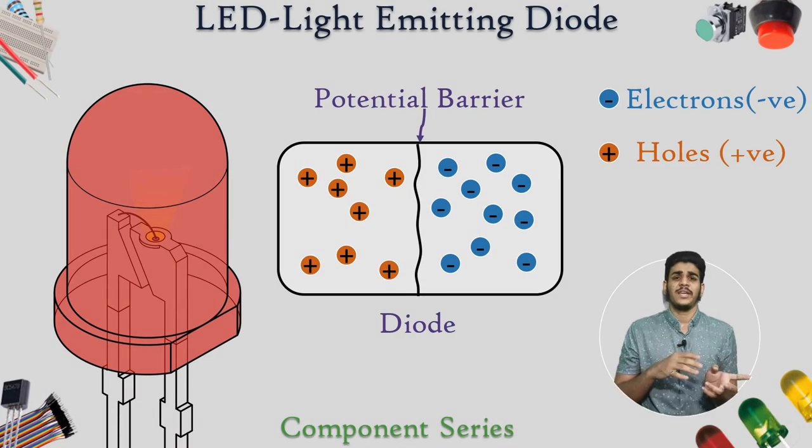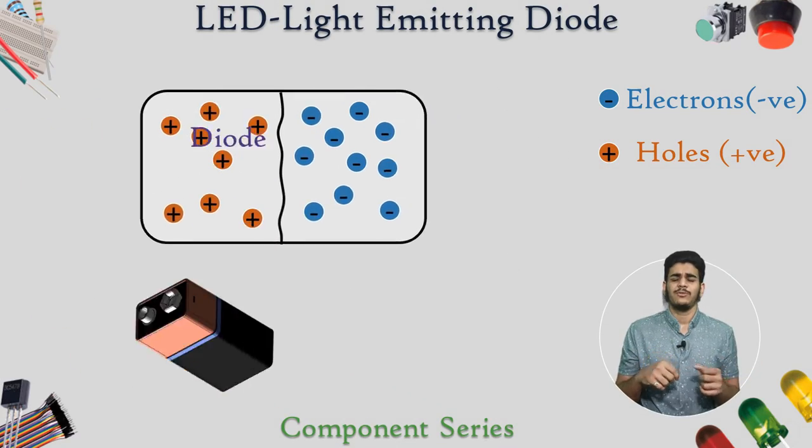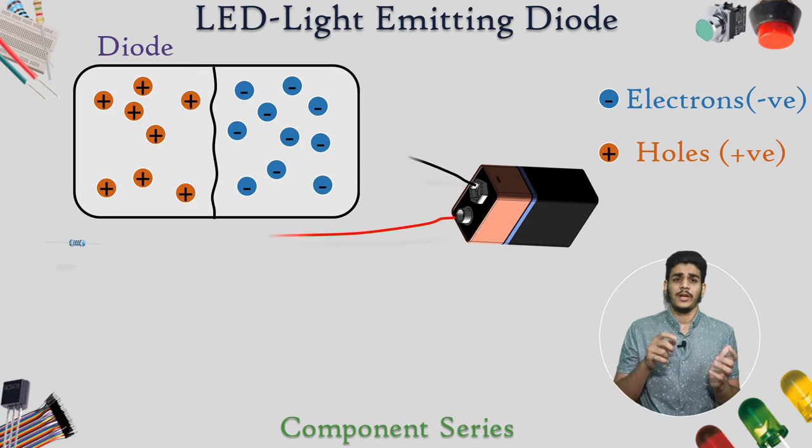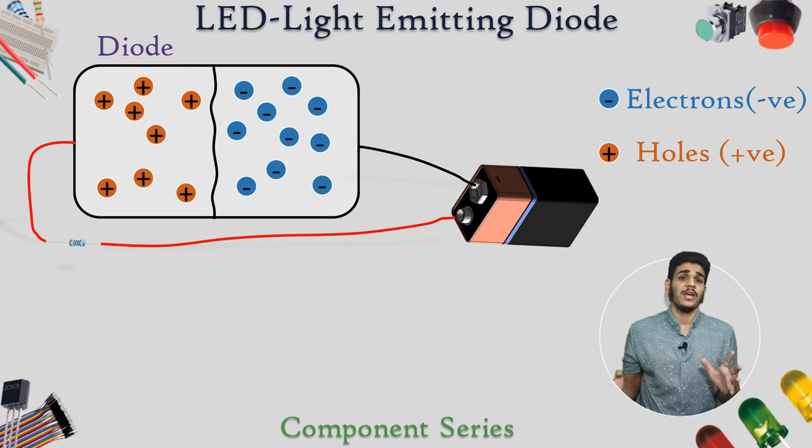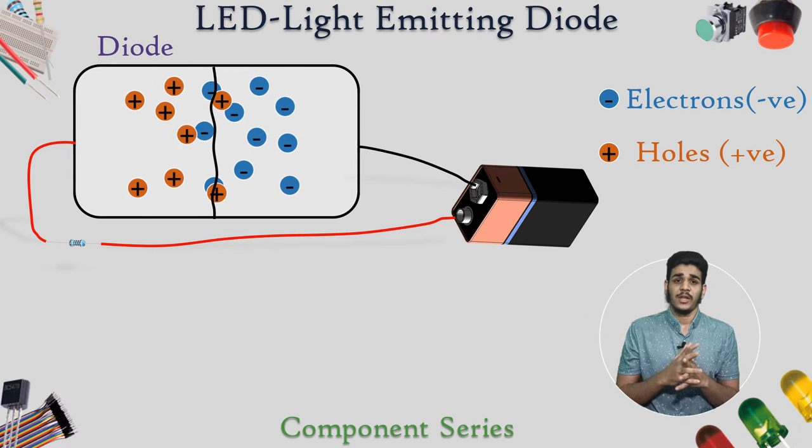So how do these holes and electrons attract each other? It is very simple. When we give voltage to this material in a forward direction like from positive to negative, the voltage given from the battery excites or energizes the holes and electrons which allow them to recombine with each other and this potential barrier becomes negligible when energy is provided to them.